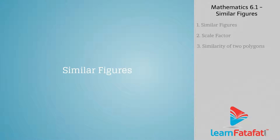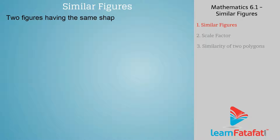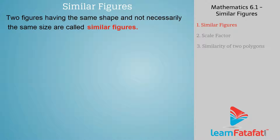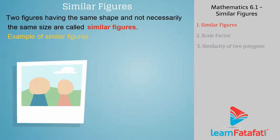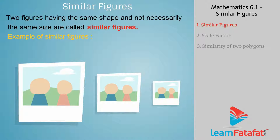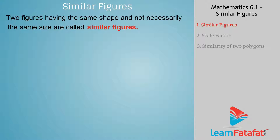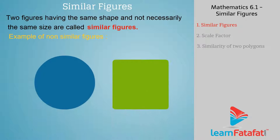Similar figures. Two figures having the same shape and not necessarily the same size are called similar figures. Examples of similar figures are circles, squares, and triangles. Another example is photographs of the same person but in different sizes. Examples of non-similar figures are a pair of a circle and a square — they are non-similar because they are not of the same shape.